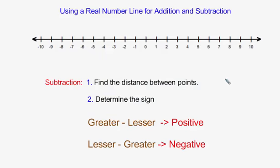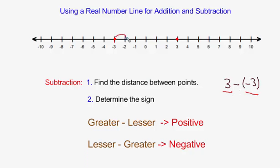For example, if I wanted to take 3 and subtract negative 3, step 1 is to find the distance between the points. Plot the first number, positive 3, and the second number, negative 3, on the real number line. The distance between positive 3 and negative 3, counting the units between them, is 6. Since the distance is 6, we know the answer involves 6.